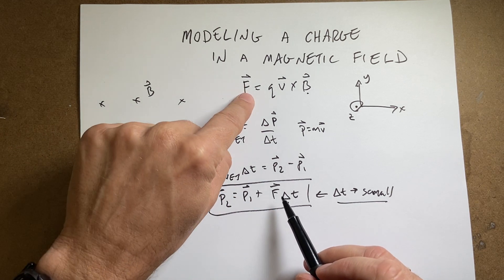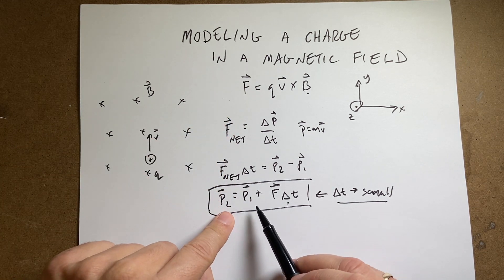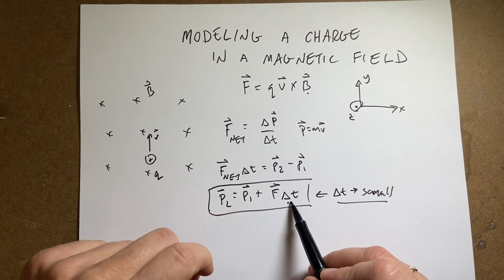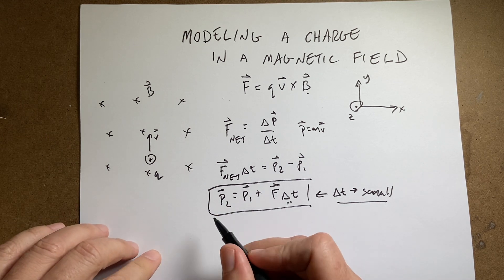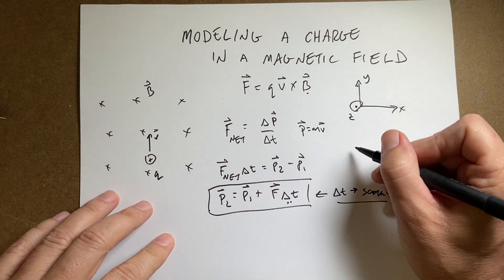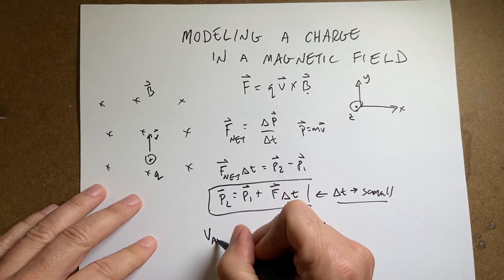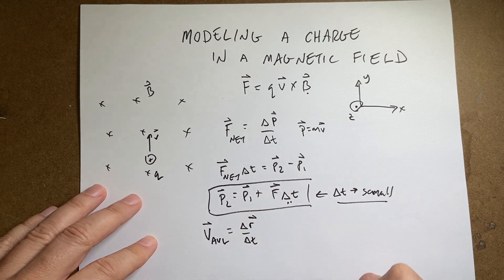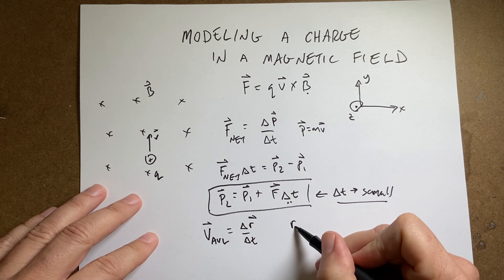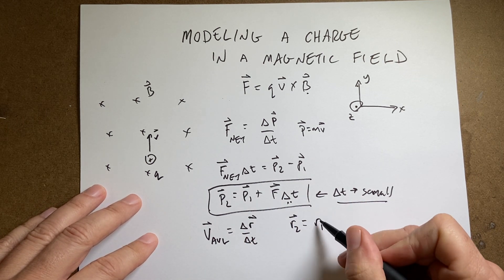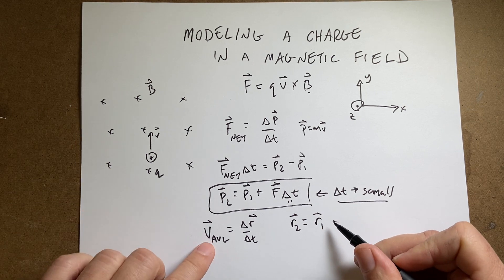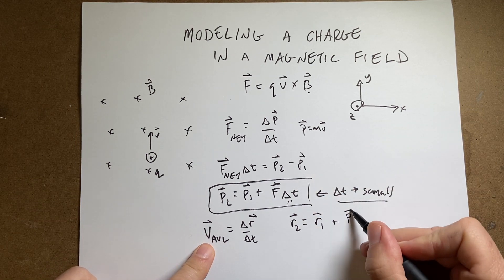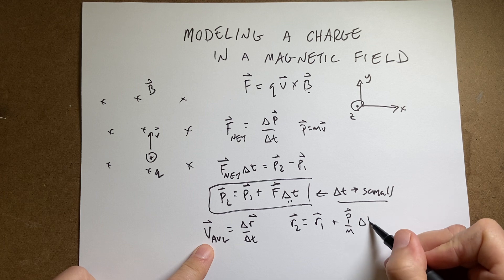Okay, so I'm going to calculate the force using this, and I'll use that to find the momentum after a short time interval. Once I know the momentum, I can do the same thing with the average velocity. V average is the change in position over the change in time. That's a vector. And then I can say R2 equals R1 plus V average, which is just going to be the momentum over the mass times delta T.